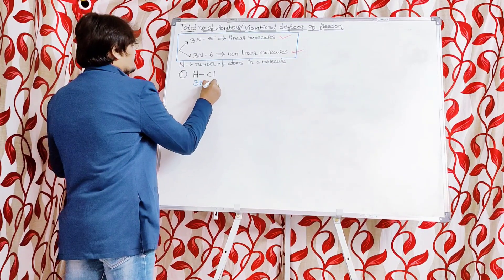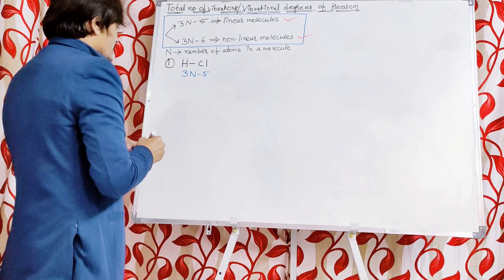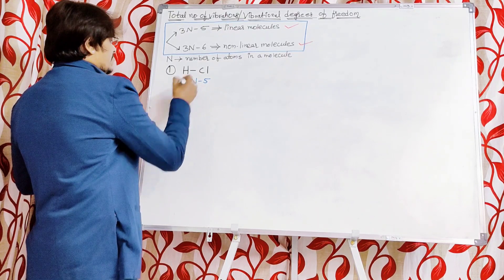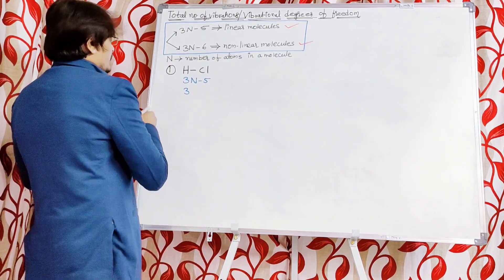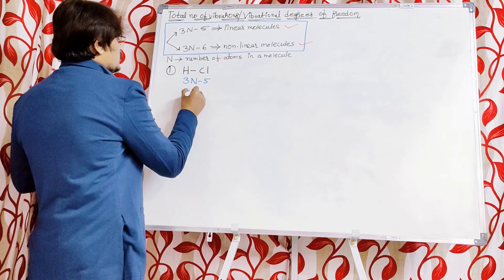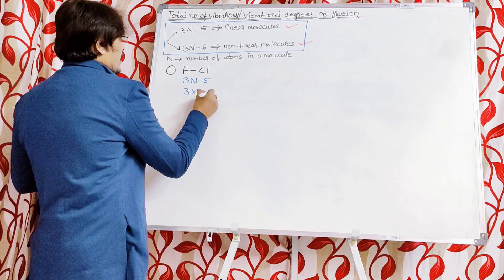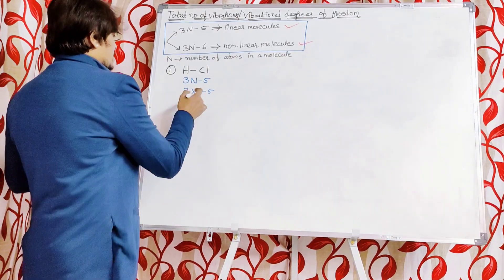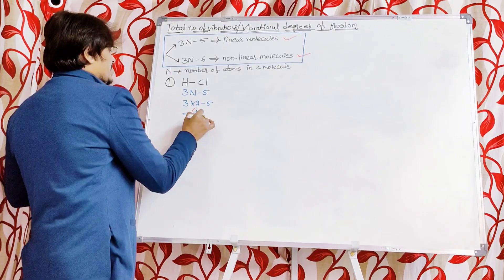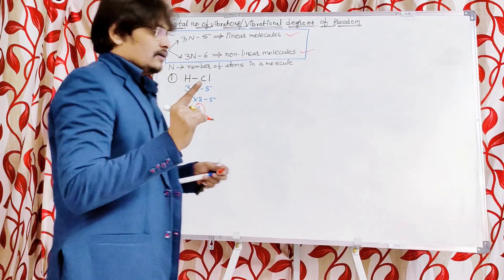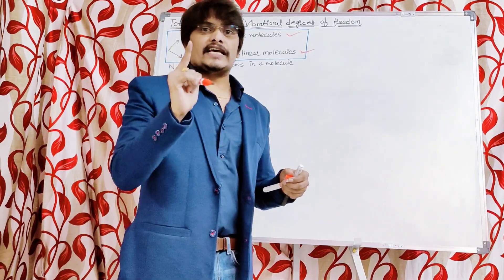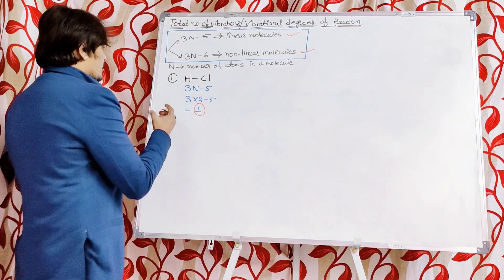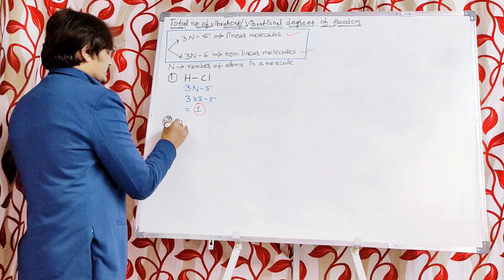The total number of atoms in HCl: H and Cl — that is 2 atoms. So 3 into 2 minus 5 equals 6 minus 5 equals 1. So 1 vibration — that is, one vibrational degree of freedom — is possible in the HCl molecule. Now in a similar fashion let us consider another example: HF.